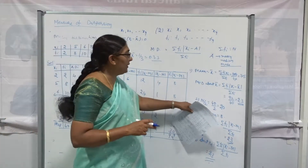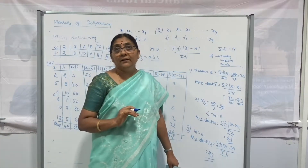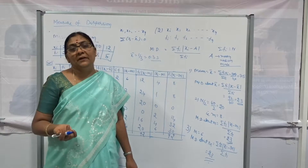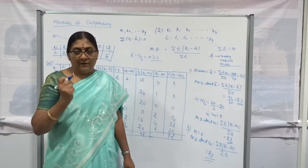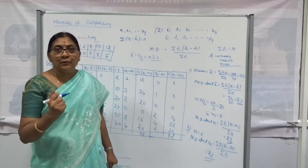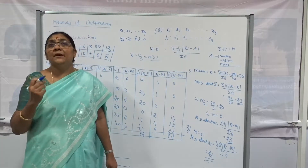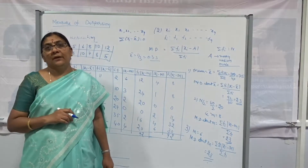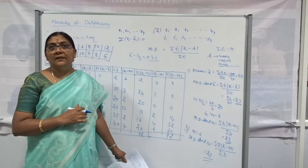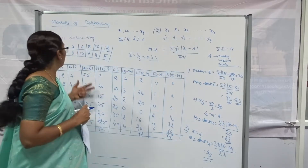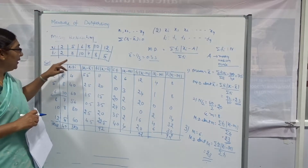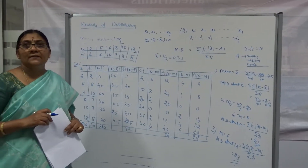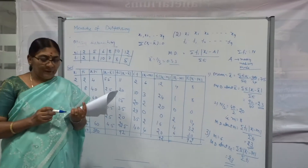But this thing does not happen when we use median and mode. Mean deviation about the mean gives accurate results only when the mean is a whole number or exact value. In other cases, we can't expect an accurate value. Now I am going to explain the third case, which is based on continuous frequency distribution.